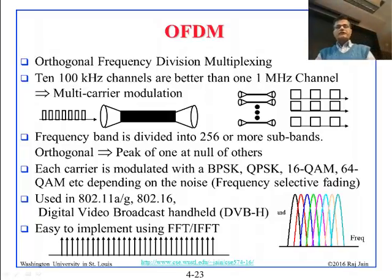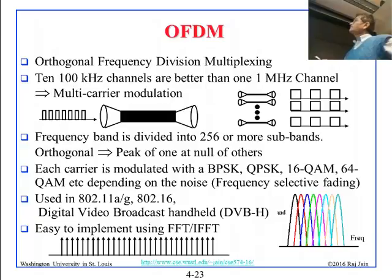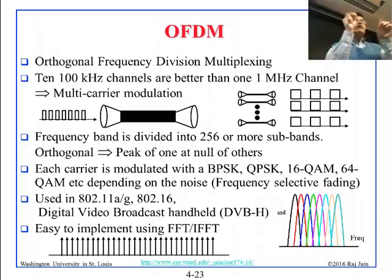OFDM stands for Orthogonal Frequency Division Multiplexing. The idea is that instead of using a big frequency band, you divide it into tiny bands. Instead of using a thick wire, you use many little tiny wires.